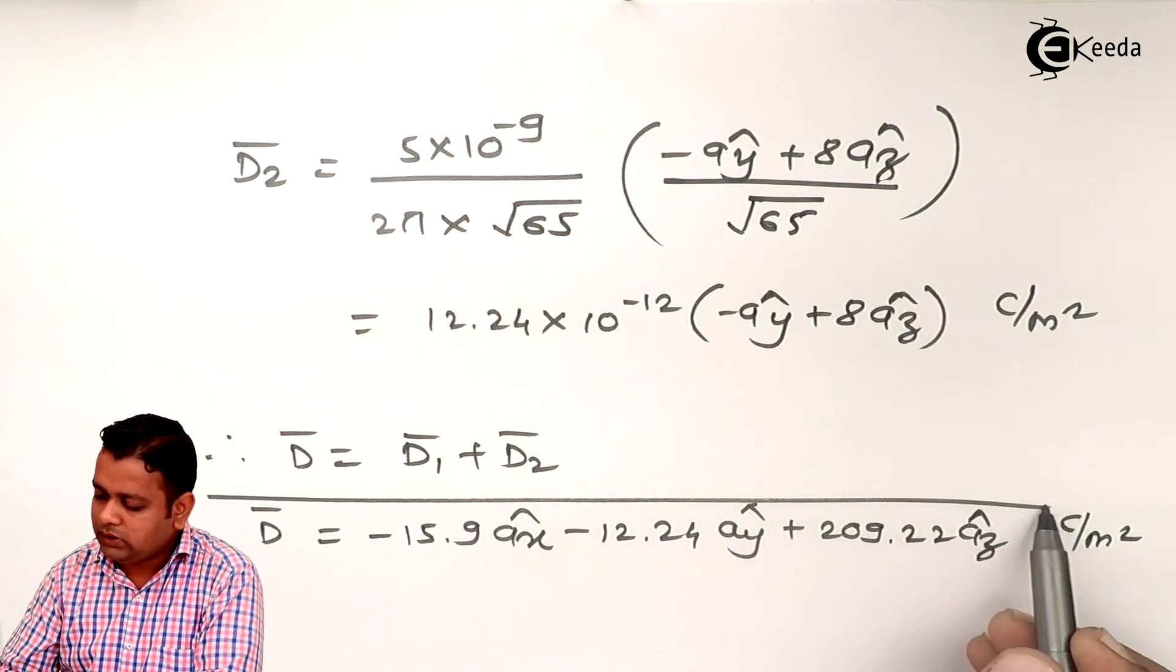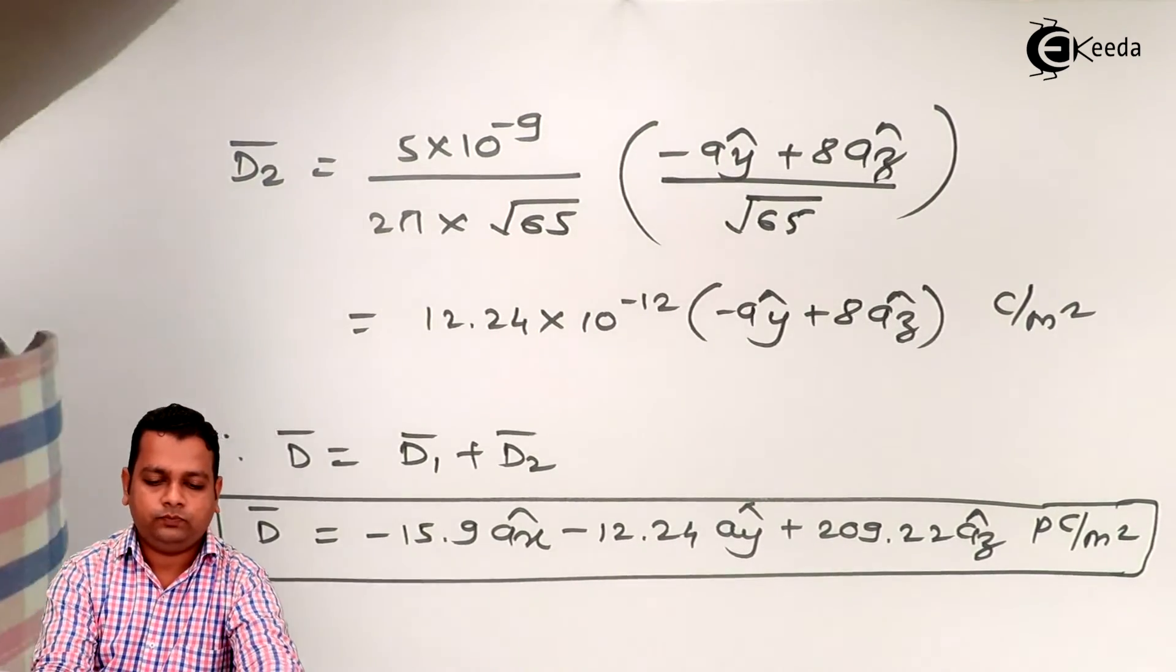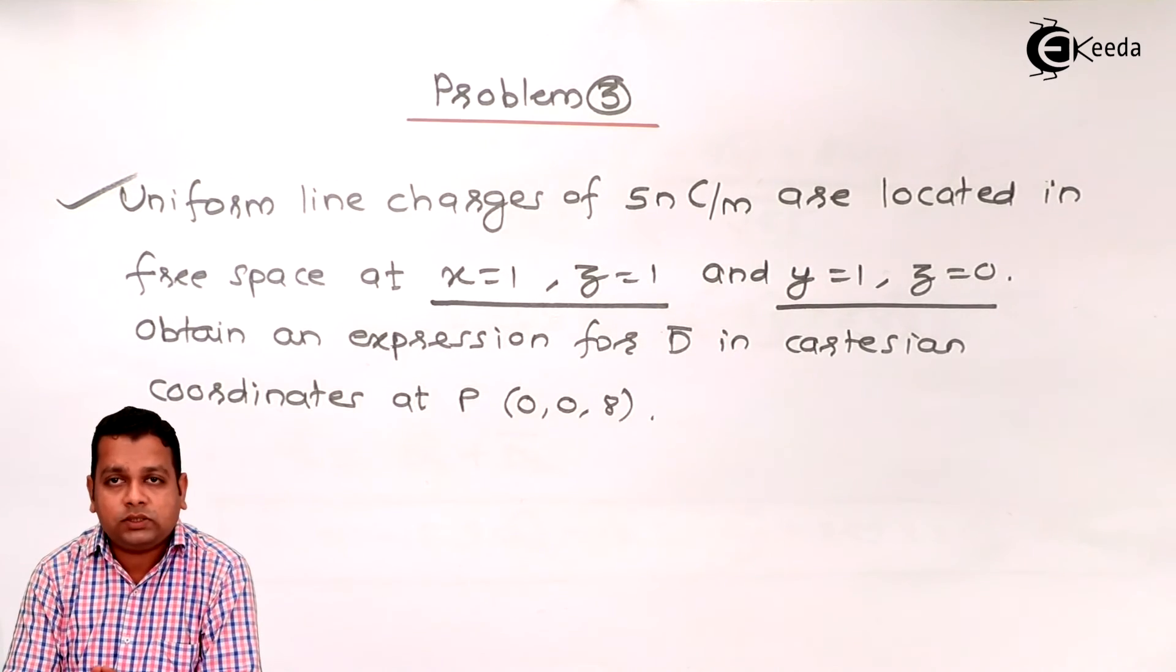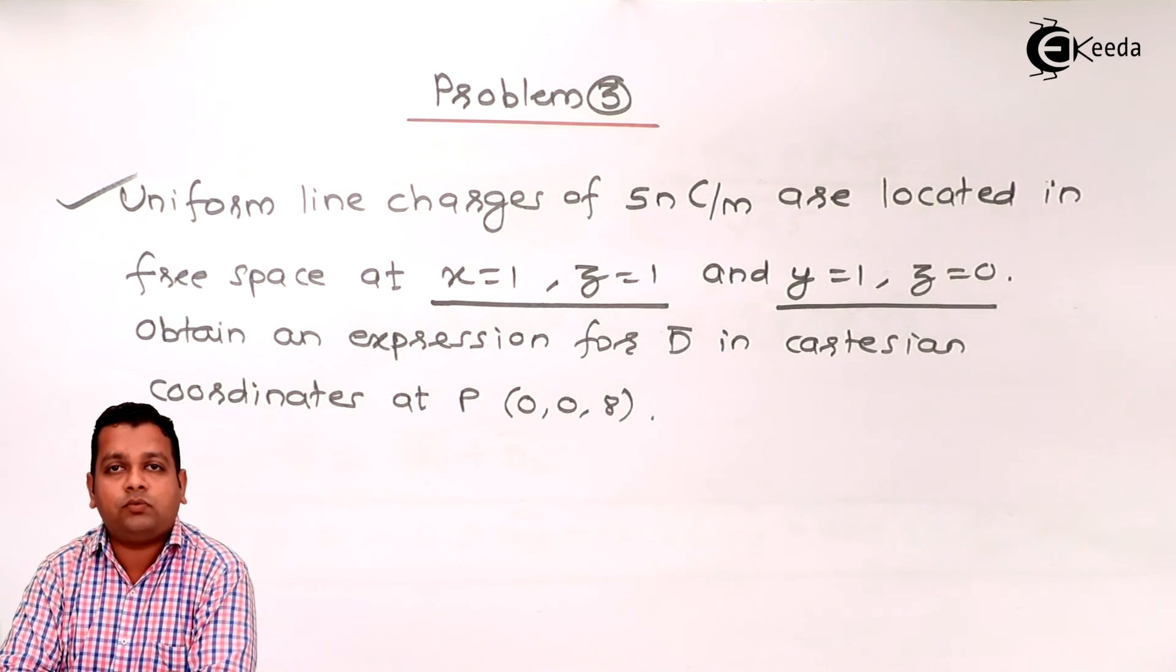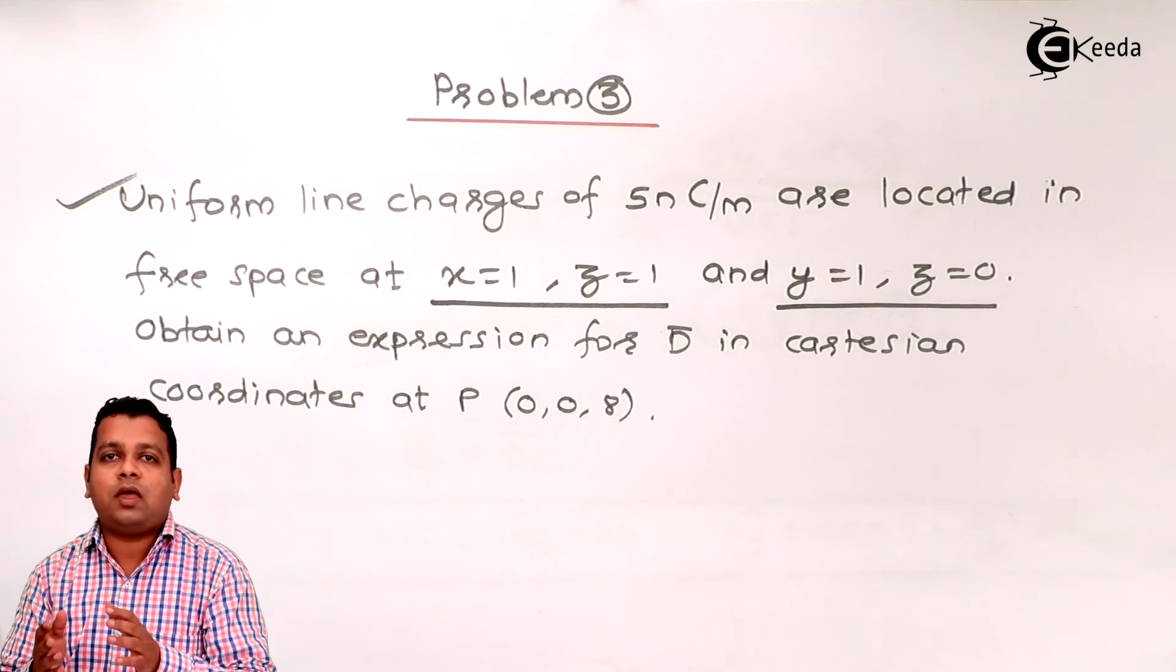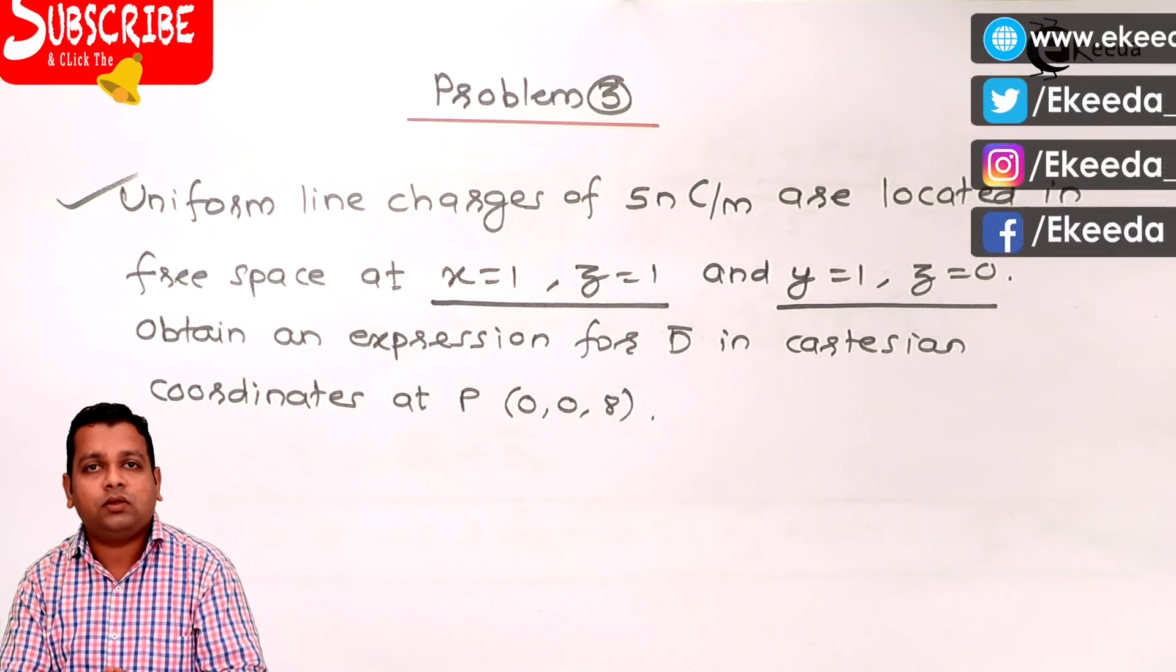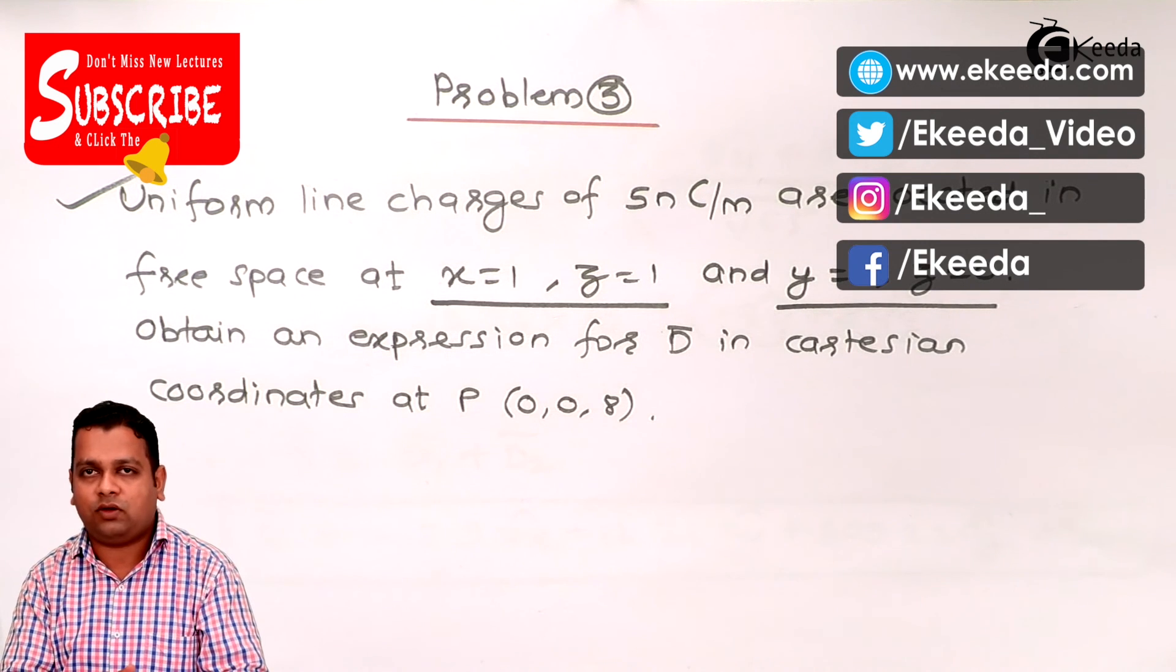So this is the required answer for the problem statement number 3. Hence we are finished with this problem statement. With this problem statement we have covered the concept of electric flux density. Electric field intensity from chapter 2 and electric flux density from chapter 3 are very important concepts which are further required to see the analysis of electromagnetic wave when we cover the magnetic field theory also. So in the next lecture we will be starting with Gauss's law. Let us see what new things we come to know for electric field in this law. Thank you.